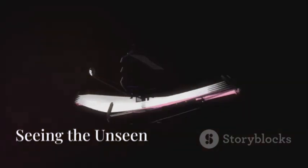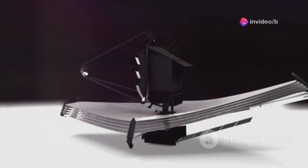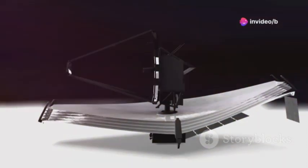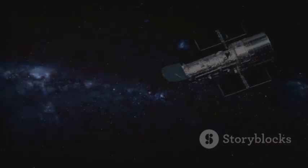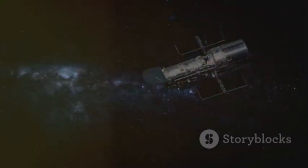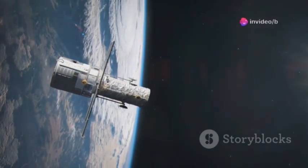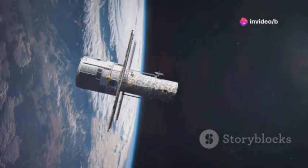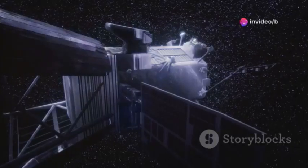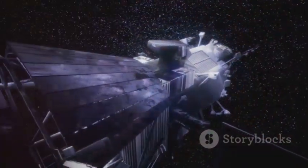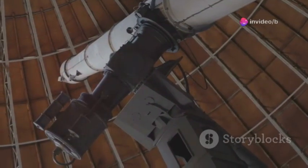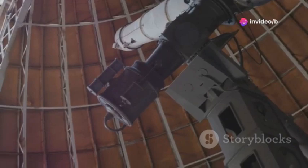The James Webb Space Telescope changed the game for observing objects like Oumuamua. Webb's superpower is its sensitivity to infrared light, perfect for spotting cold, faint objects in deep space. Its giant mirror collects more light than any previous space telescope, allowing it to see farther and in greater detail. Webb's location at L2 keeps it cold and free from Earth's atmospheric interference, giving it a crystal-clear view. Its sunshield blocks heat, letting its instruments cool to near-absolute zero, essential for detecting faint heat signatures. Webb's advanced instruments like NIRCam and MIRI can capture sharp images and analyze light in ways never before possible.